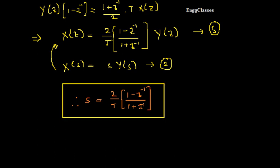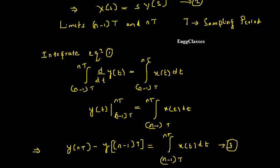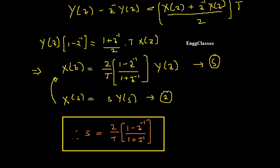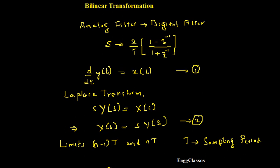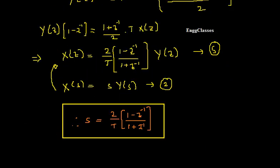Once we know S equals 2/T × (1 − z⁻¹)/(1 + z⁻¹), we can solve any numerical on bilinear transformation. If given a transfer function, replace every S with this expression to transform from analog to digital filter. There are also other aspects — such as what happens to the left-half and right-half planes of the S-domain in the Z-domain — which we shall see in the next video. Thank you everyone for watching and keep watching NG Classes YouTube channel on digital signal processing. Subscribe for more videos.